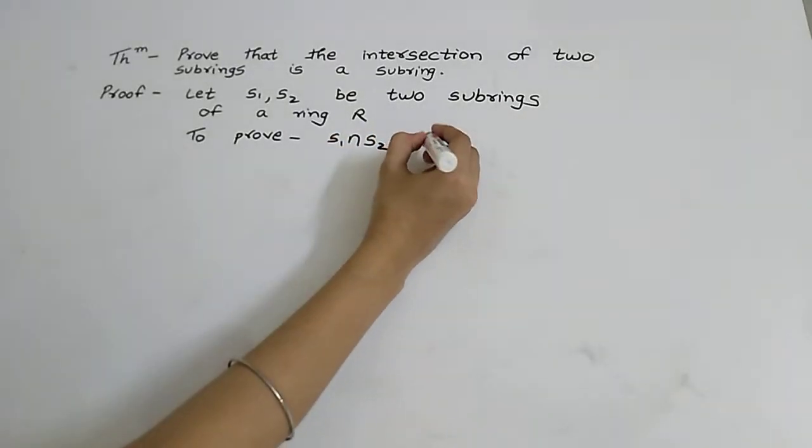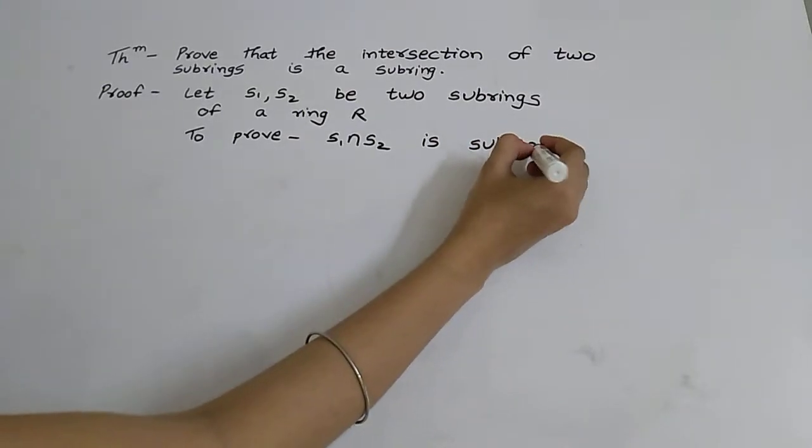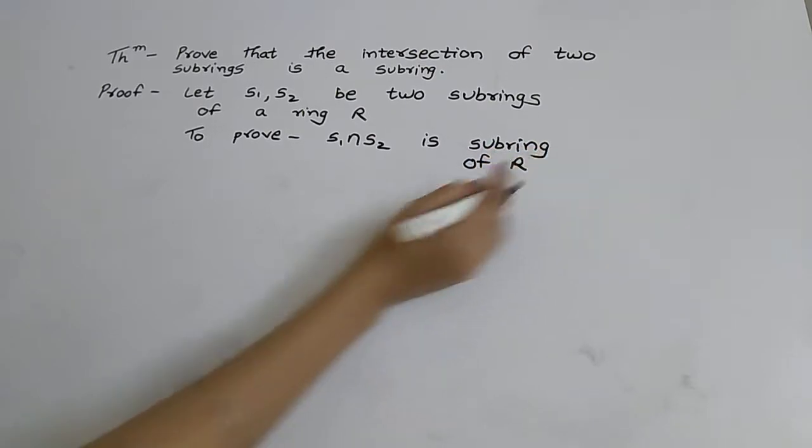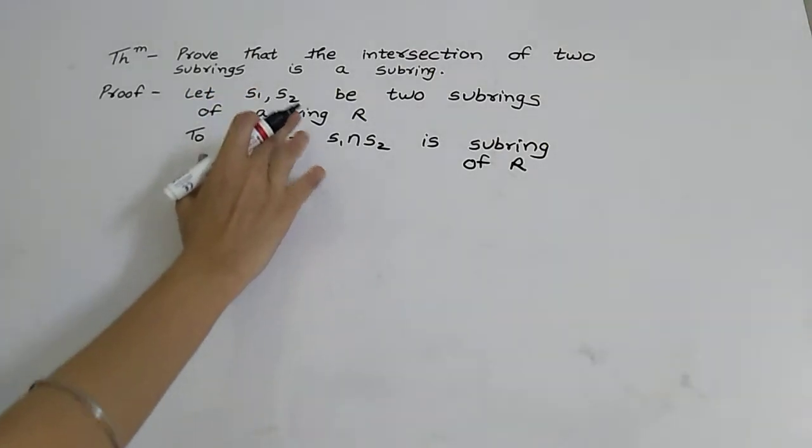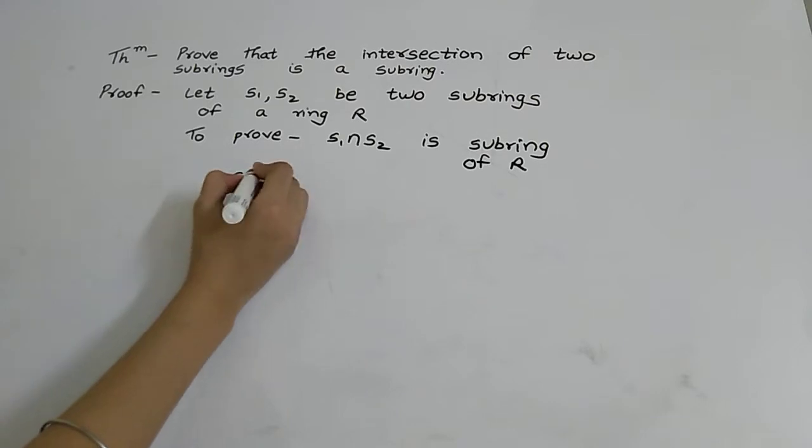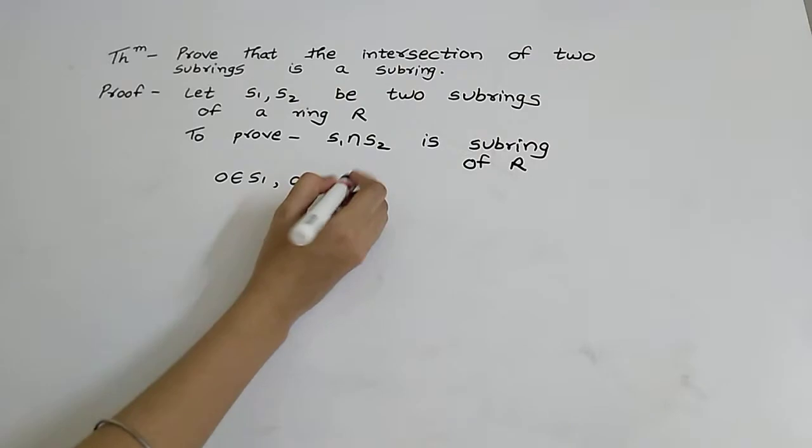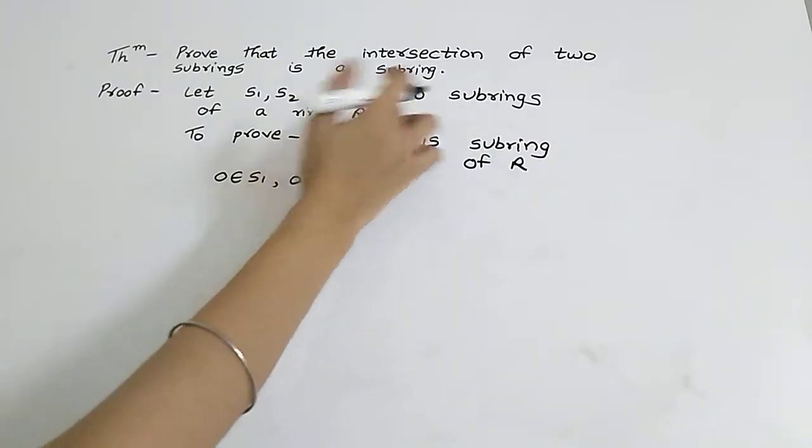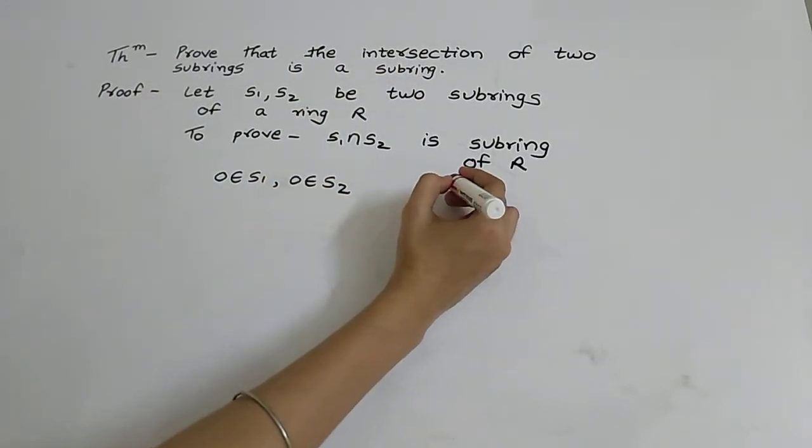Now as S1 and S2 are subrings of ring R, therefore 0 belongs to S1 and 0 belongs to S2, because they are subrings of ring R, means S1 and S2 are rings. The first condition of ring property is that R under addition should be an abelian group.